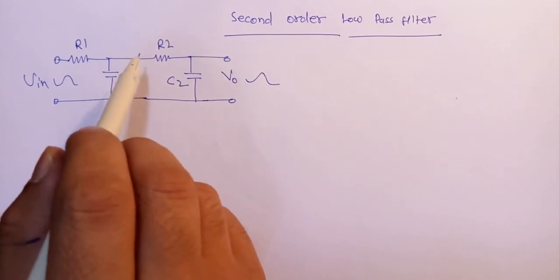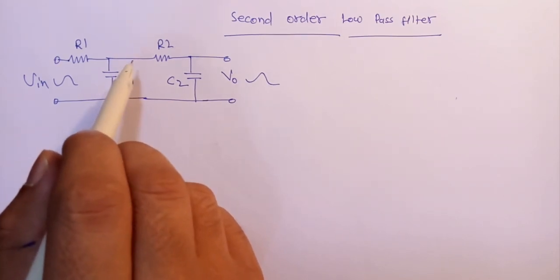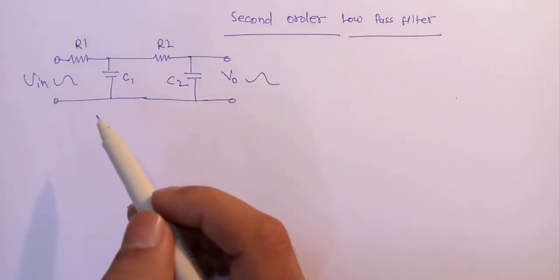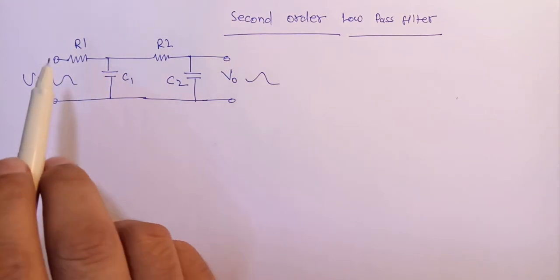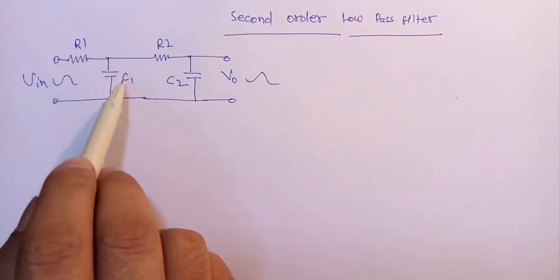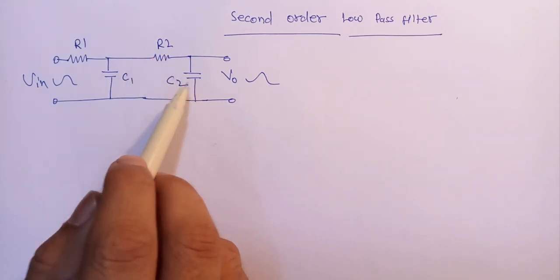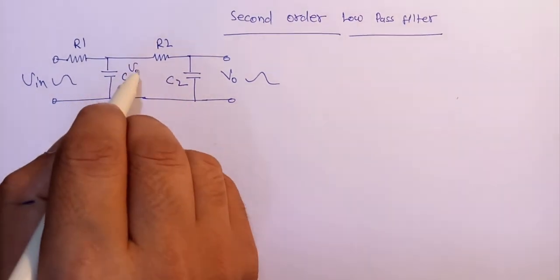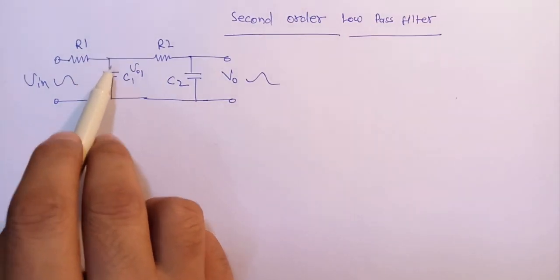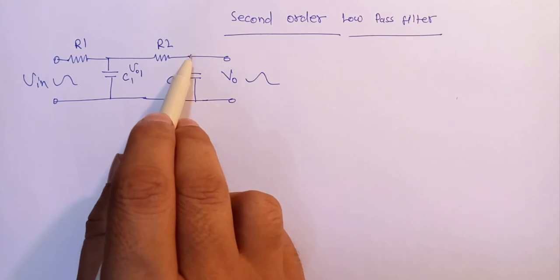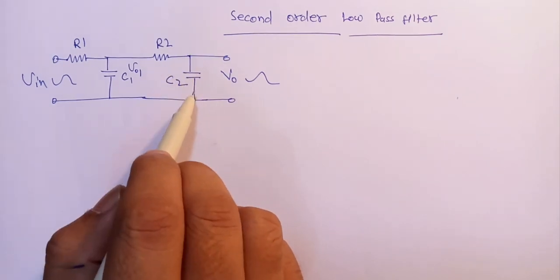However, sometimes in a filter circuit this -20 dB per decade angle of slope may not be enough to remove an unwanted signal. Then we implement two stage filtering, as shown below: R1, C1 in series and R2, C2 in series. The voltage of the first stage is taken across capacitor C1 and the voltage of the second stage is taken across capacitor C2.